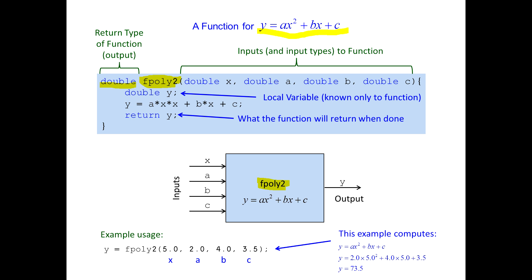The function is going to take some arguments that we pass to it. We have the variable x — we're going to pass a double precision value, so a double type. Then a comma, because we're also going to pass the coefficients: variable a, which is type double; variable b, which is type double; and variable c. Notice all of these are inside the parentheses.